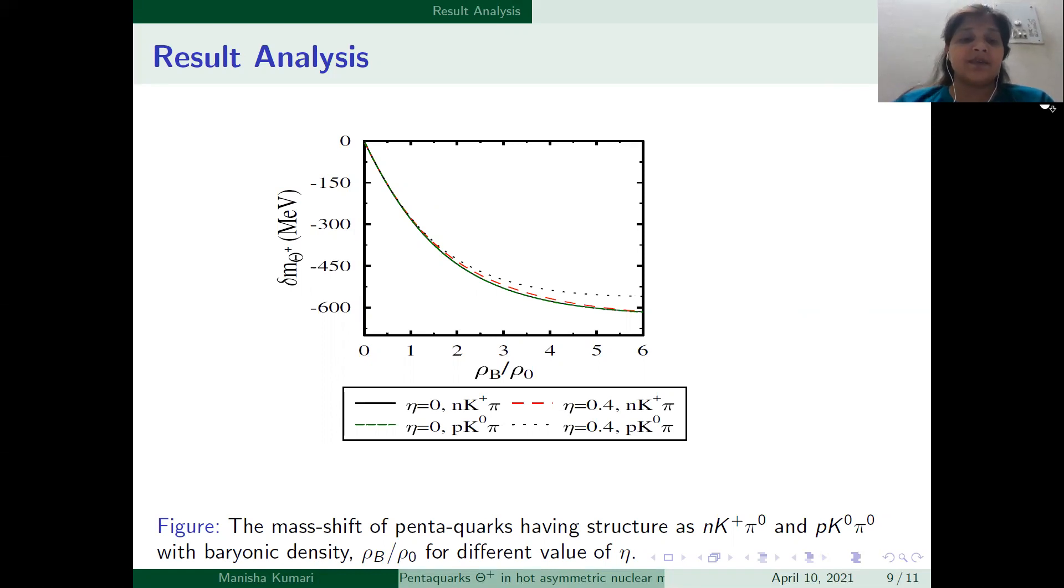Whereas the negative mass shift of nK plus pi zero is large as compared to the pK0 pi zero for eta equal to 0.4 at higher density. This is due to large positive mass shift of K0.